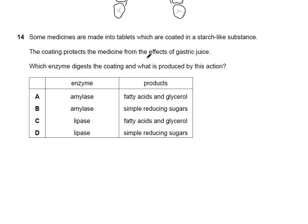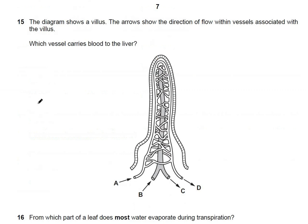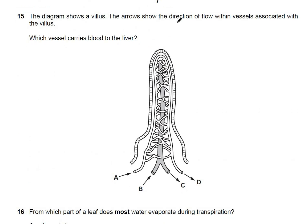Question 14: tablets are coated in a starch-like substance that protects medicine from gastric juice. Which enzyme digests the coating and what is produced? The coating is starch, so the enzyme is amylase, and the product is simple reducing sugars or glucose residues. The answer is B. Note: lipase is the enzyme for digestion of fats.